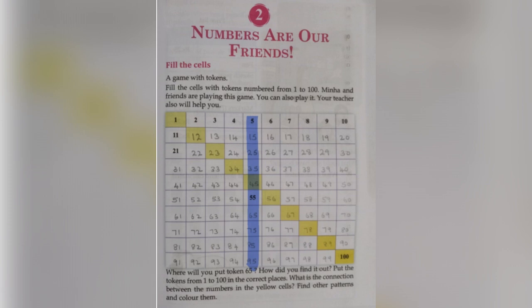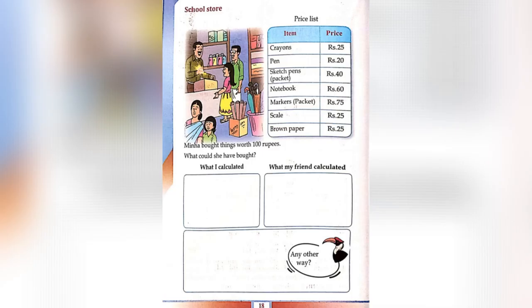For example, 15 minus 5 is equal to 10, and 95 minus 85 is equal to 10.